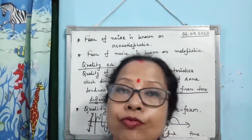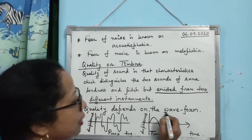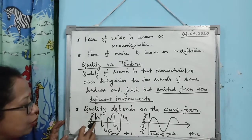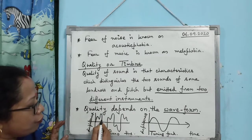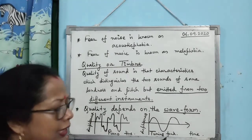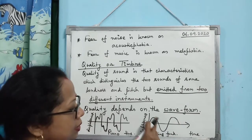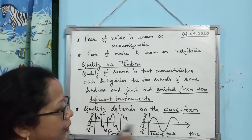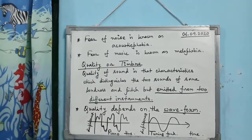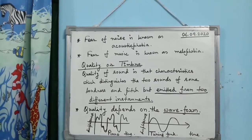Quality depends on the waveform of the sound. Different instruments produce different waveforms. For example, the sound from a piano has a particular waveform, while the sound from a tuning fork produces a different waveform. Because their waveforms differ, the quality or timbre of the sounds produced by a piano and a tuning fork are different.